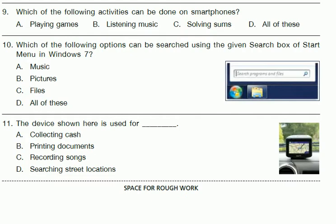Question 9: Which of the following activities can be done on smartphones? Playing games, listening to music, solving sums — all of these. Question 10: Which of the following options can be searched using the search box of the Start Menu on Windows 7? Music, pictures, files — all of these.